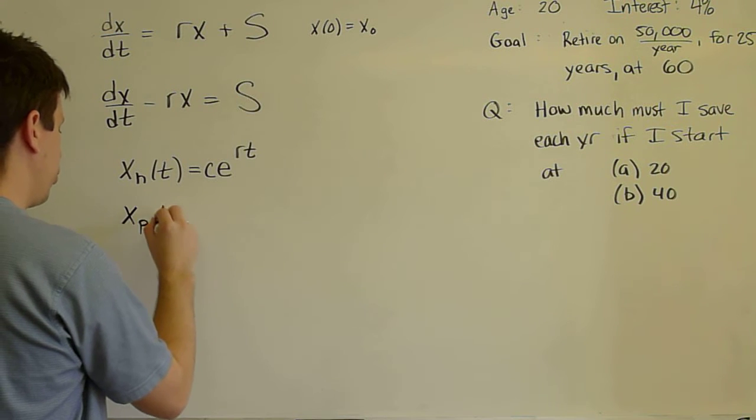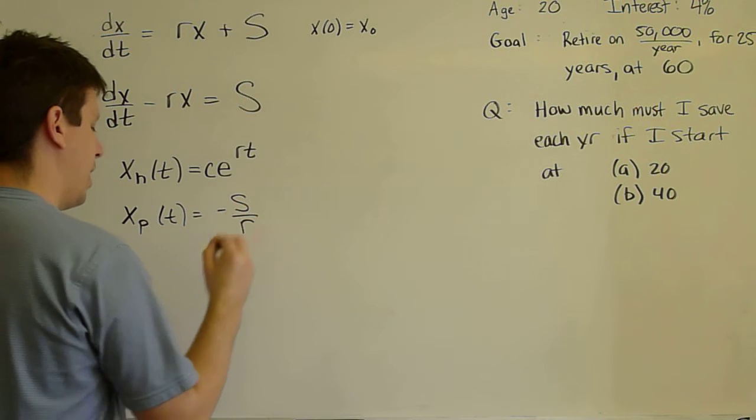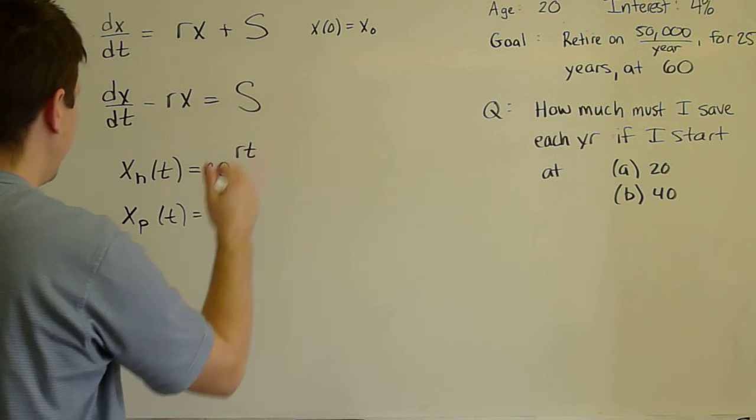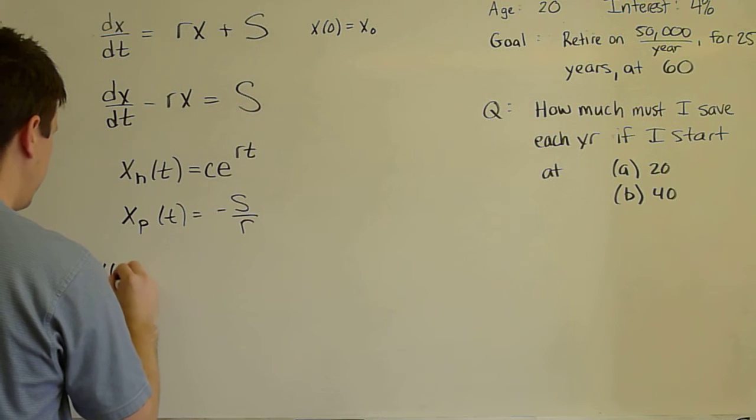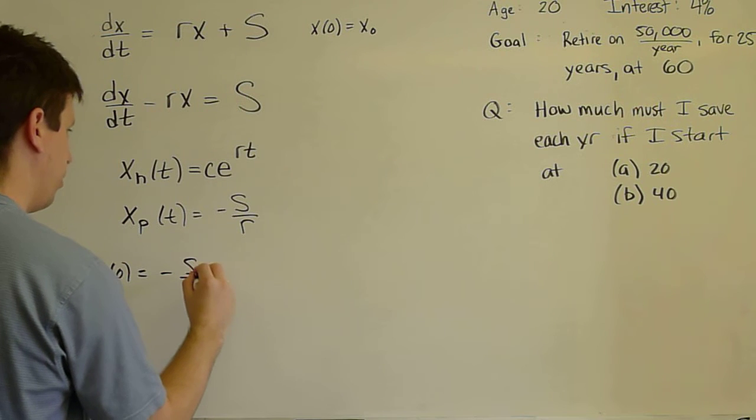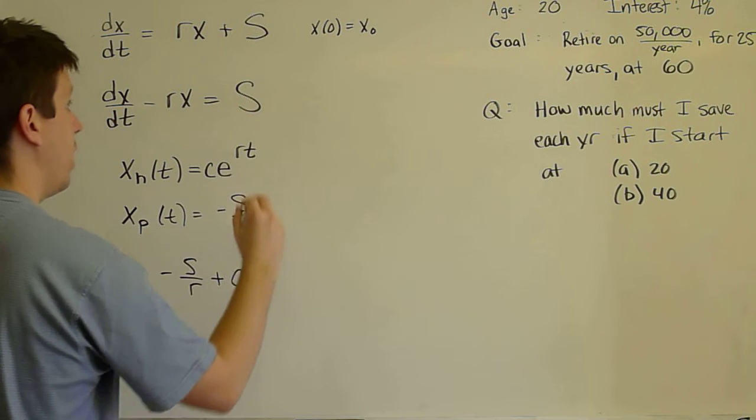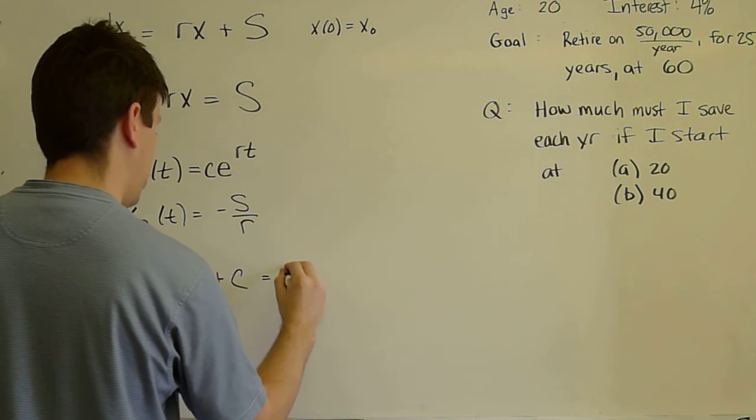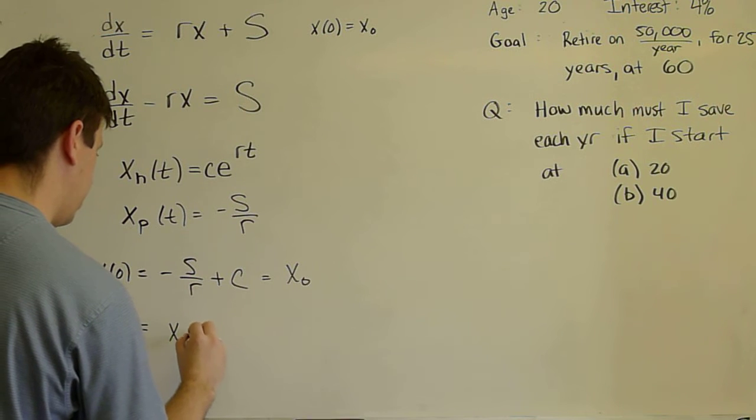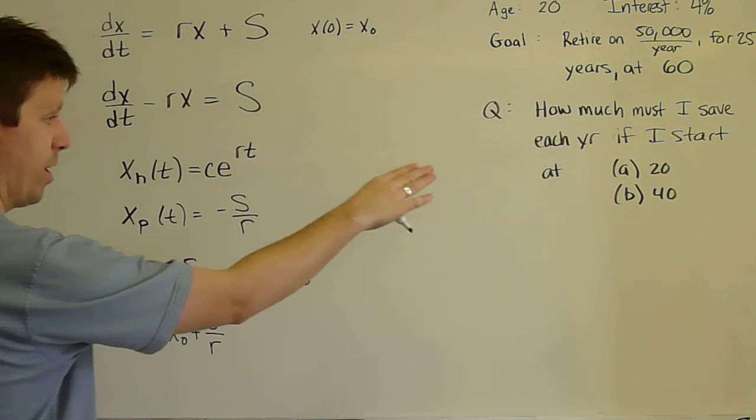So the particular solution is -S/r. And if you then evaluate to solve the initial condition, we say X(0) must be -S/r + Ce^0. And that must equal X₀.